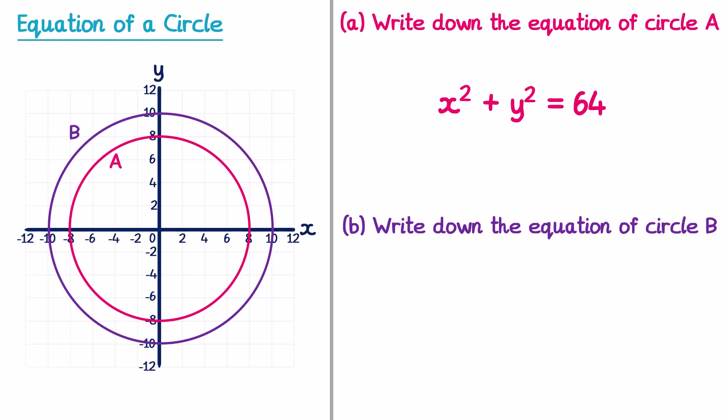For part B, we need to find the equation of the purple circle, and I can see the radius is 10. So it's x² + y² = 10², and 10² is 100.